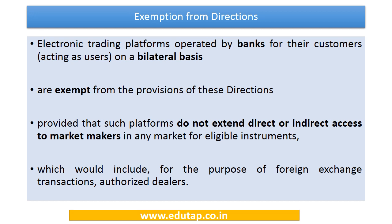Certain exemptions have also been granted from these directions. Electronic trading platforms operated by banks for their customers on a bilateral basis — very narrow platforms which are simply banking transactions with customers — have been exempt from the provisions of these directions, provided that these do not extend direct or indirect access to market makers in any market for eligible instruments. Since they are trading with customers on a one-on-one bilateral basis, they have been kept outside the ambit of these directions.